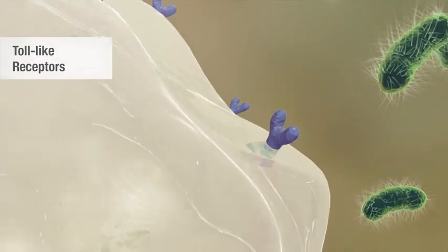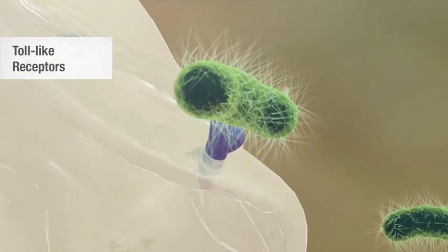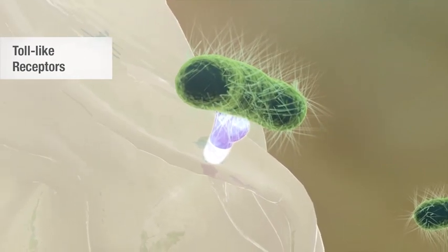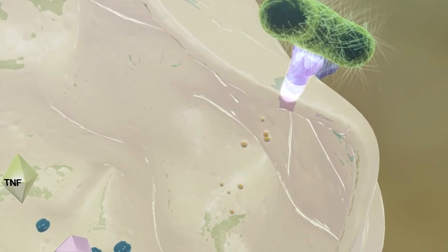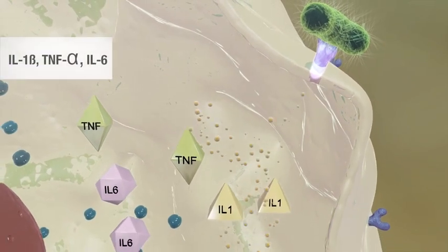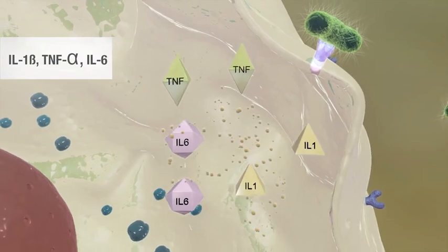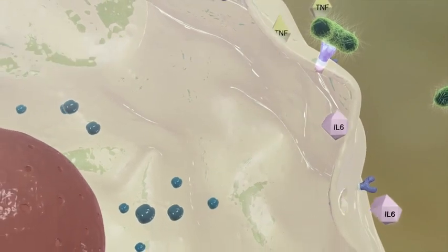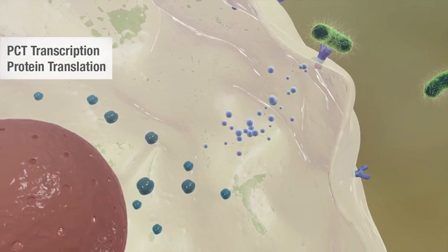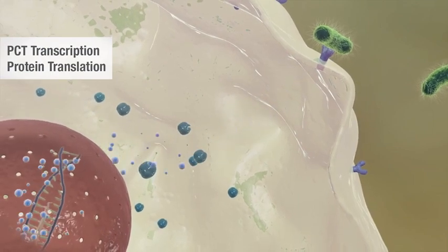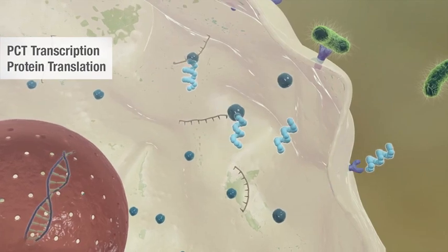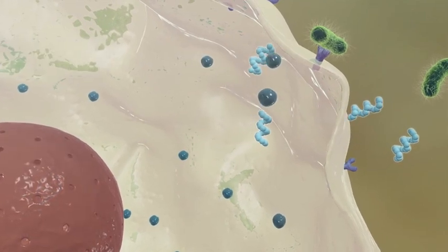Toll-like receptors on the cell surface flag the presence of microbial toxins. In response, nonspecific inflammatory cytokines, such as IL-1-beta, TNF-alpha, and IL-6, which are present in the cell, are simultaneously secreted from the cell. Signaling pathways specific to bacterial pathogens stimulate PCT transcription and are translated into PCT protein.